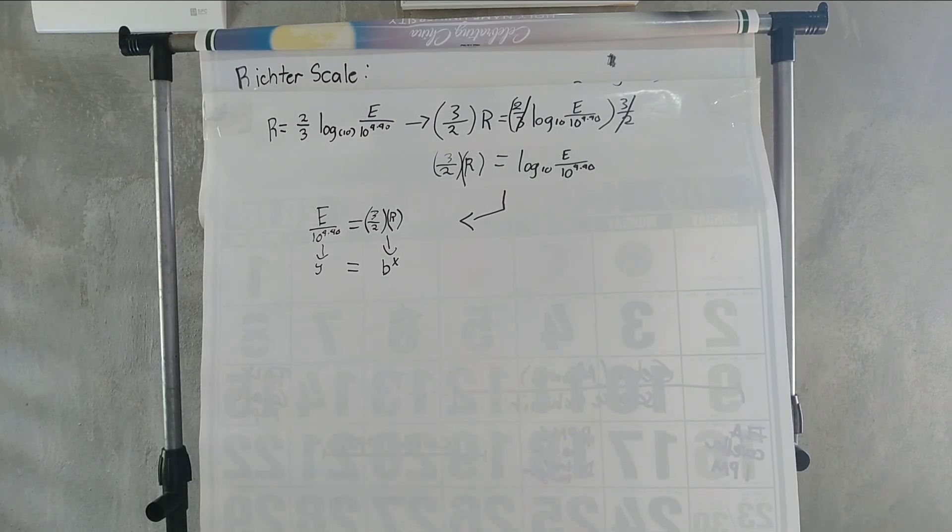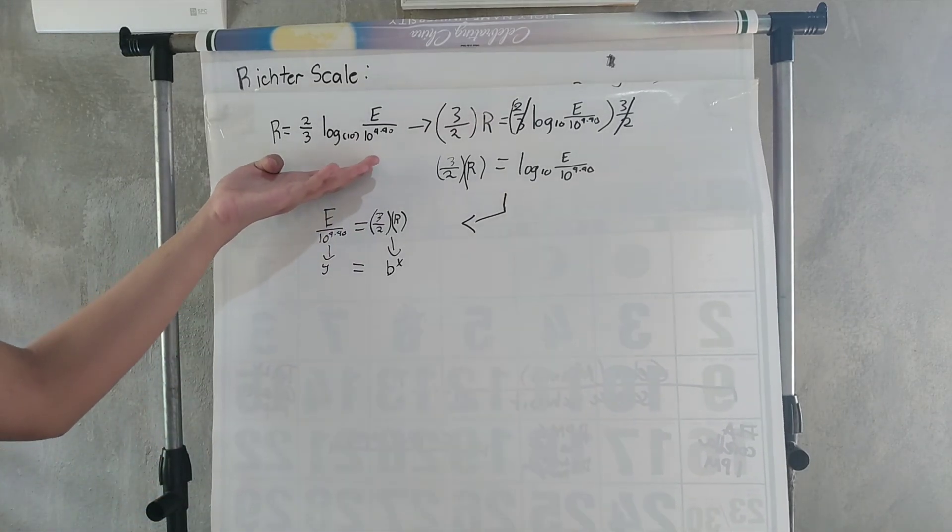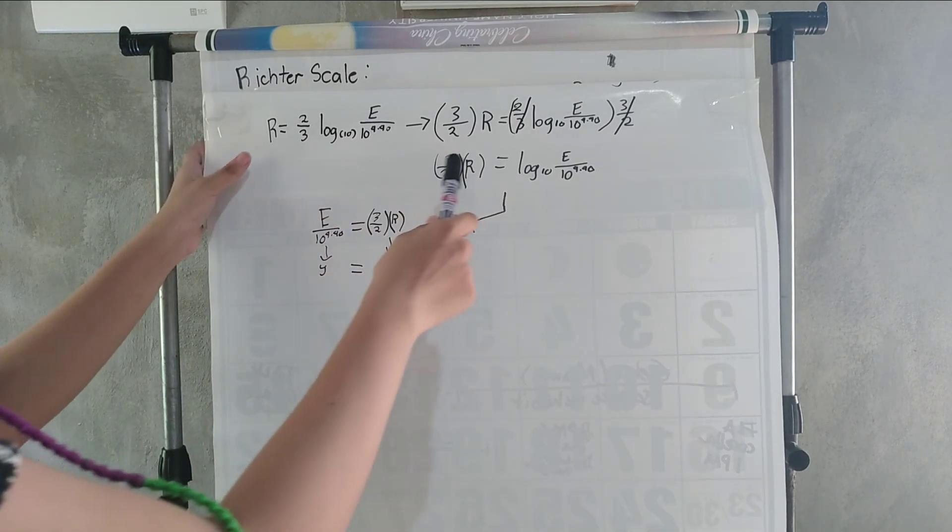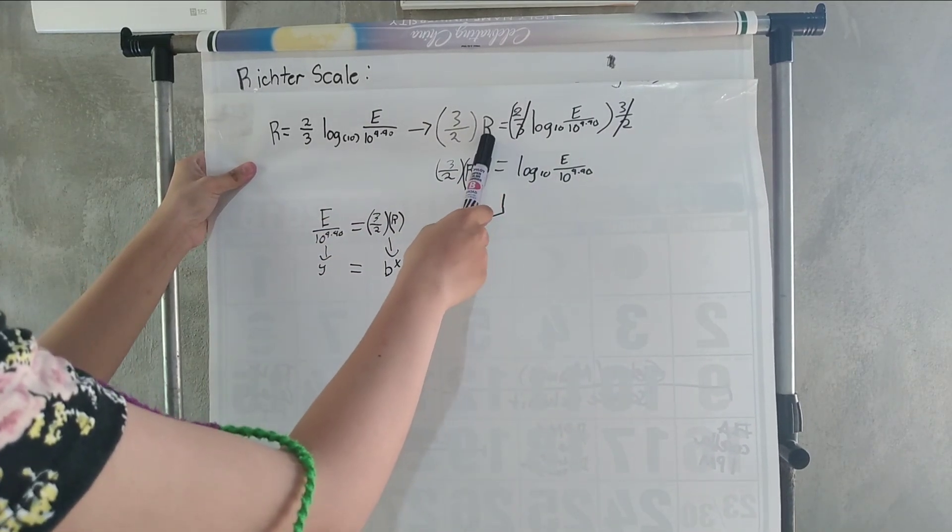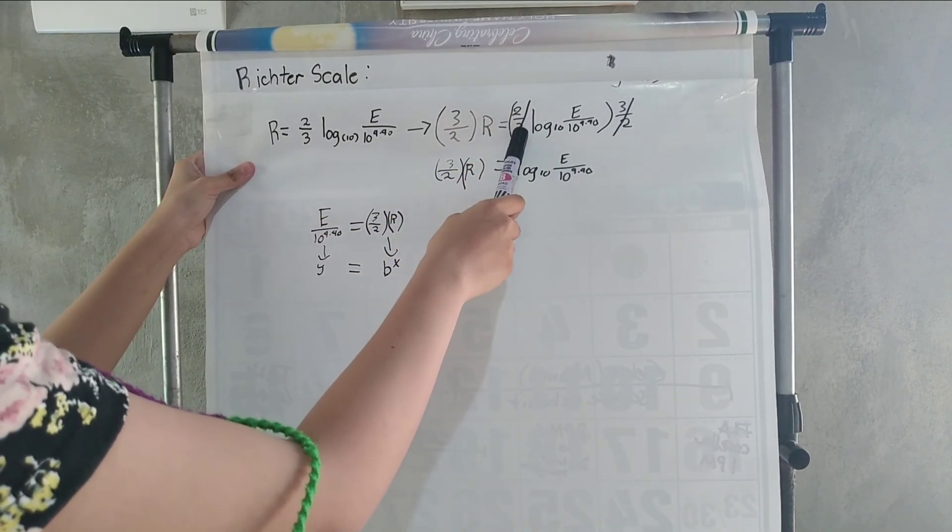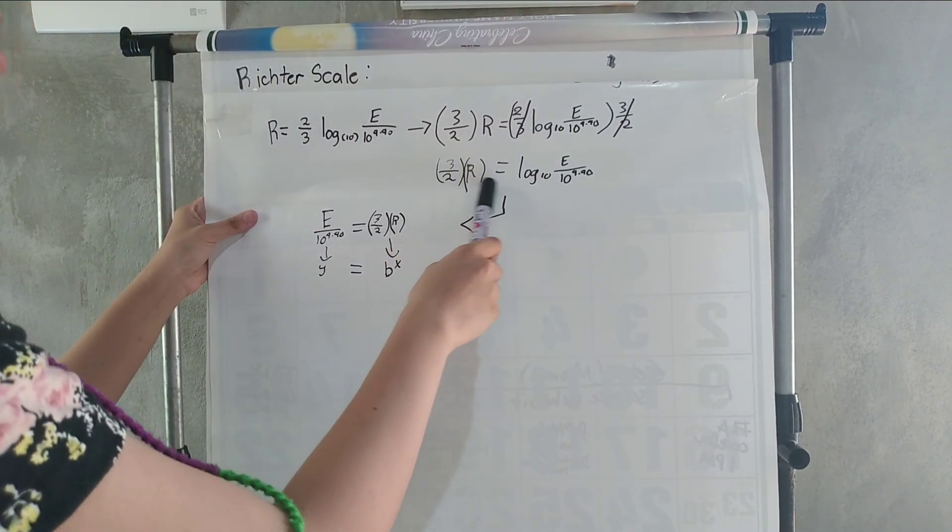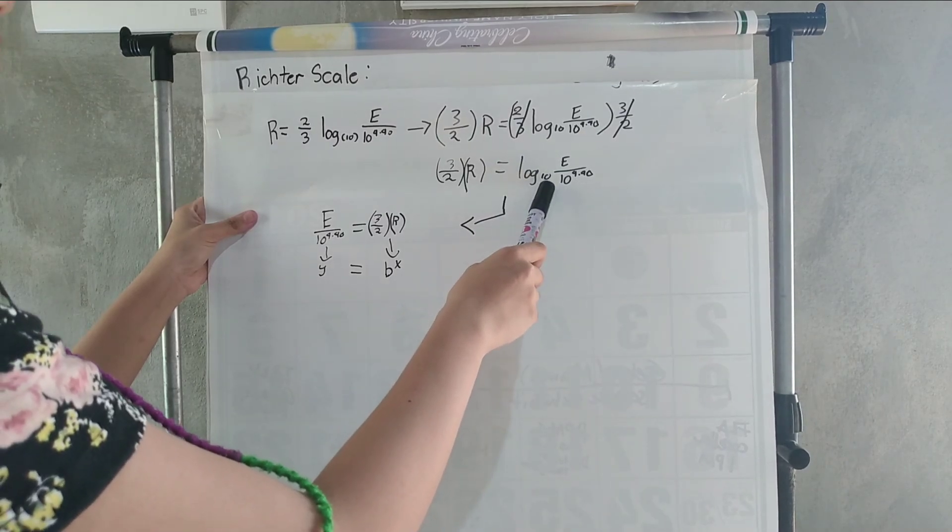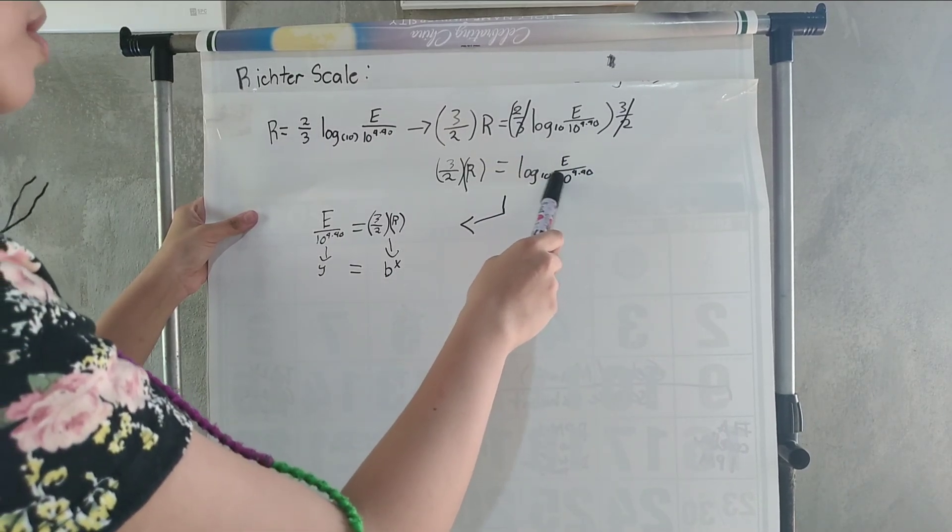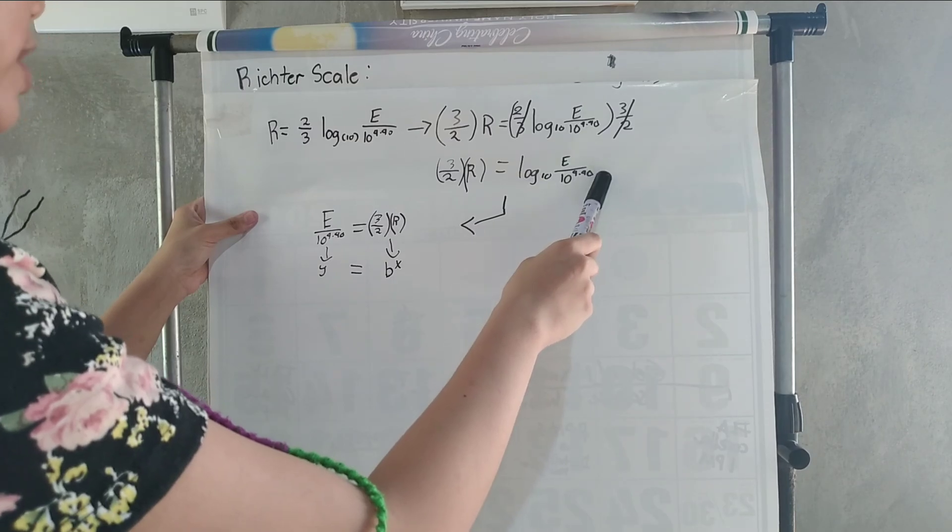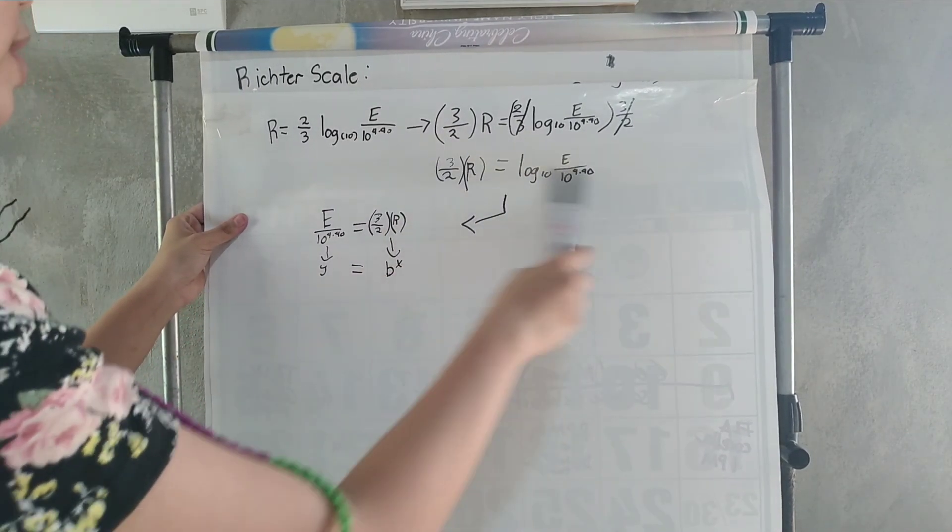Okay, so to sum everything up, we start with the Richter scale and we multiply the given magnitude with the reciprocal of 2 over 3 to cancel it out. Which is going to be 3 over 2 times the magnitude equals log base 10 times E over 10 to the power of 4.40.